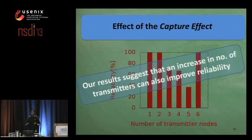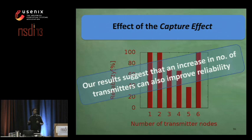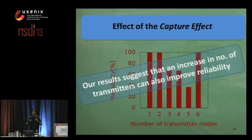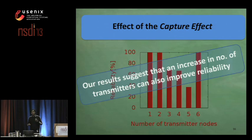So we have two options: either find the optimal number of transmitters, or transmit at both low and high transmission densities. Clearly, the first option may not even be practical, so we opt for the second option.